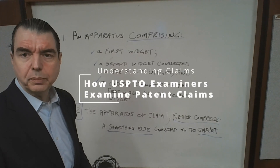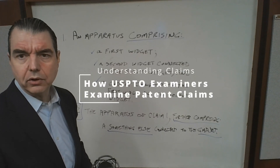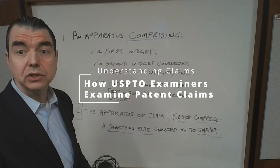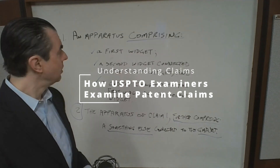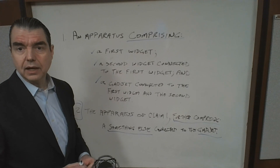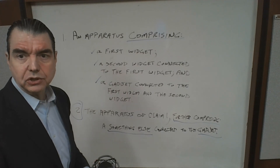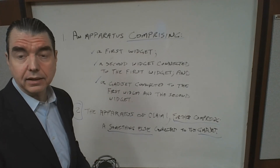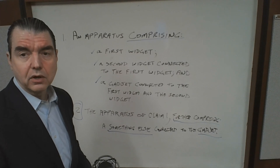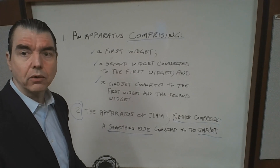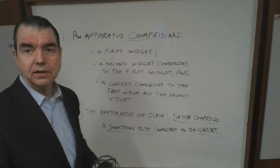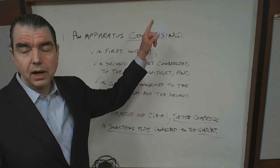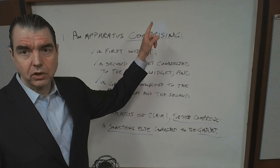Let's talk about how a USPTO examiner examines your patent claims when your patent application is filed. There are two types of claims in a patent application generally: independent claims and dependent claims. For more information about the structure of those claims and the difference between independent and dependent claims, see my video on claim structure here.